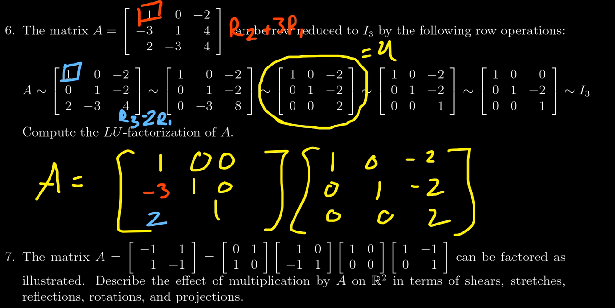And then lastly, to get into echelon form, we have our pivot in the 2,2 position. We got to get rid of this negative 3. And to do that, we're going to take row 3, add to that 3 times row 2, excuse me. So in the 3,2 position, we're going to put a negative 3.